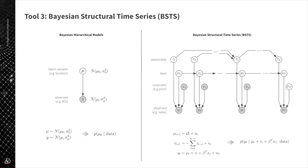We define laws according to which these hidden processes evolve over time, fit this model using our data, and estimate distributions of these different parameters. This enables us to estimate the distribution of our output data given this model structure, and in turn forecast future values along with the distribution of those future values.